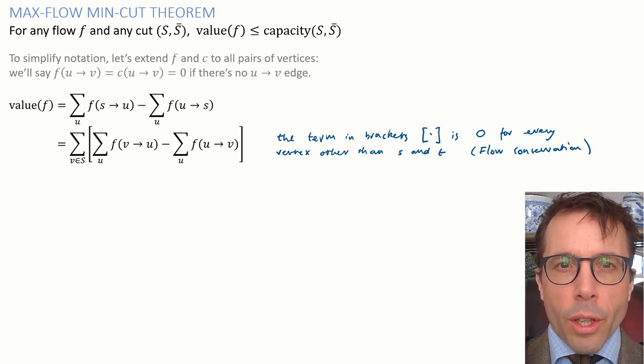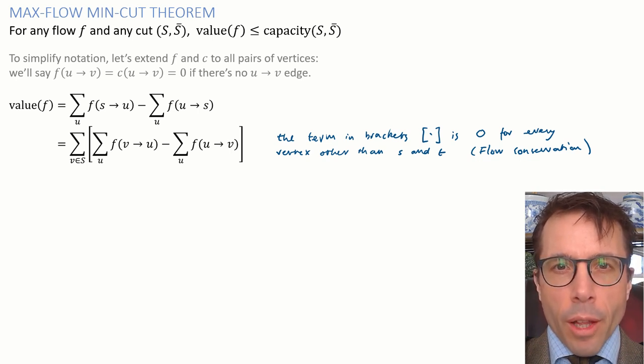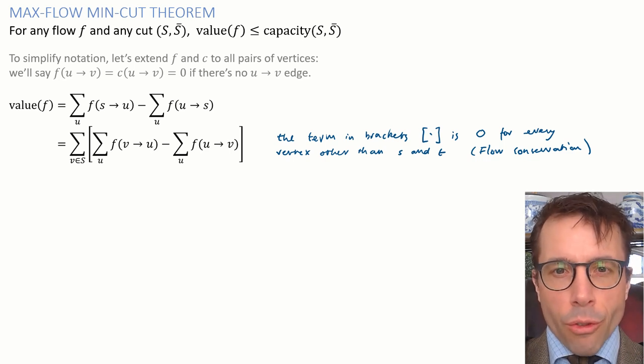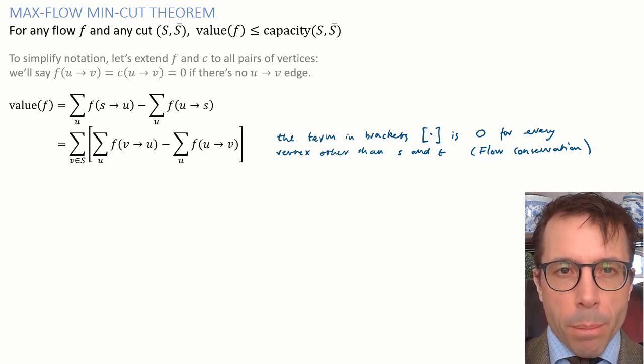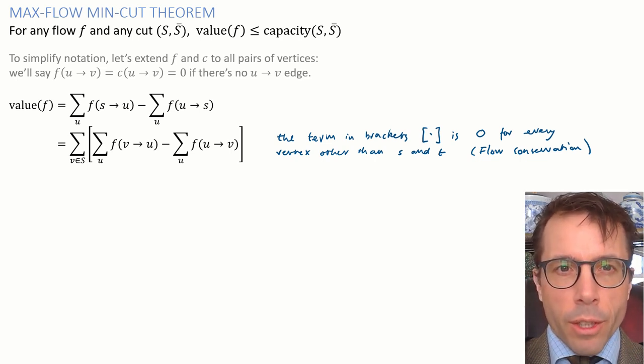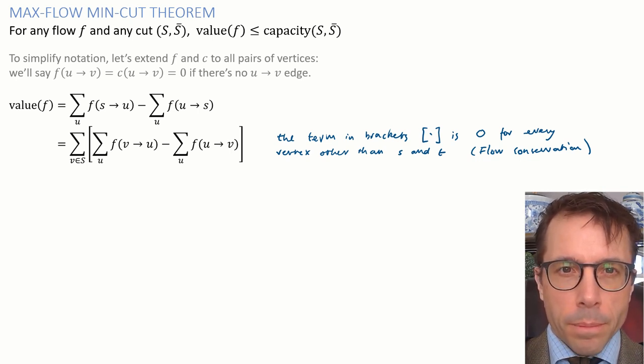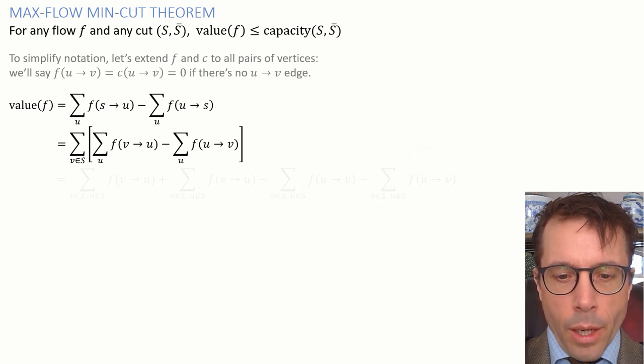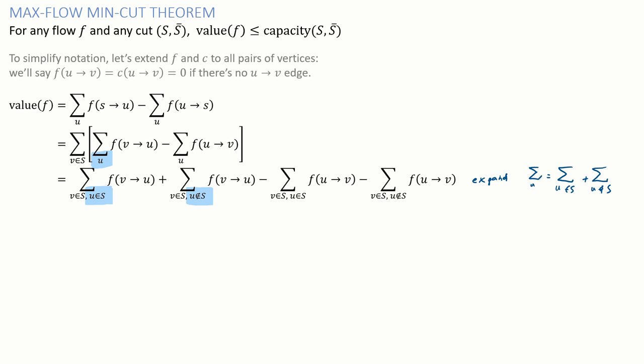Next, this is where we use flow conservation. This term in square brackets is equal to zero for every vertex other than the source and the sink. That's just the literal definition of flow conservation. So if I add up a copy of this term in square brackets for every vertex in the set S, the only vertex that counts is the source vertex, v equals little s. So that's why it's equal to the preceding line. Next, I'm just expanding the sum. I'm writing the sum over all vertices u in two parts. This is the sum over all vertices u in big S plus the sum over vertices u in S bar.